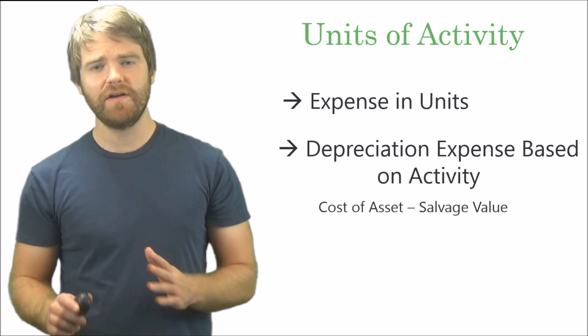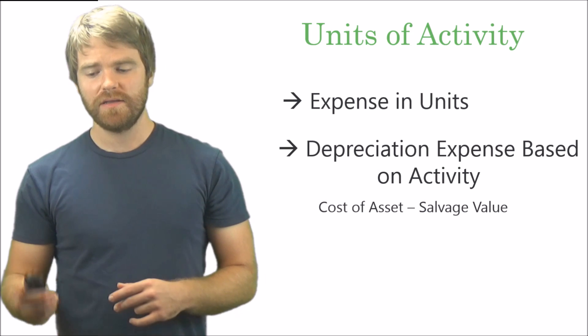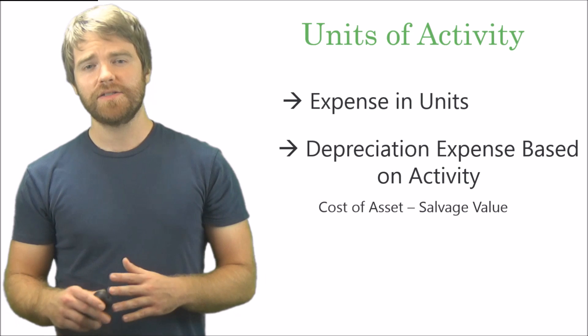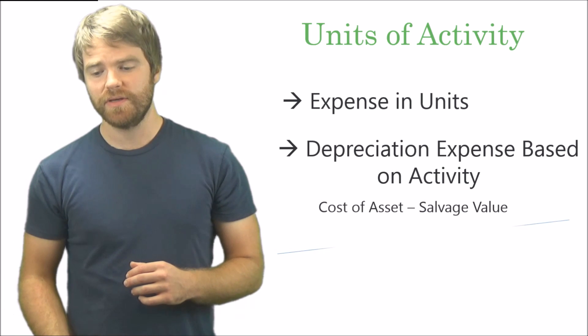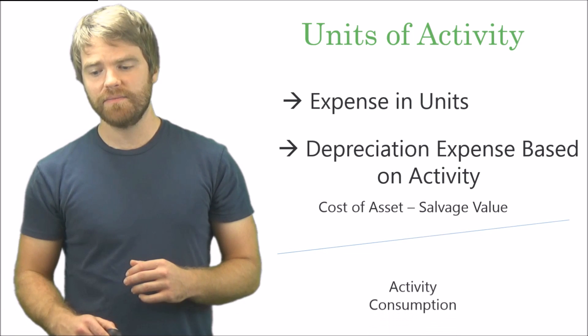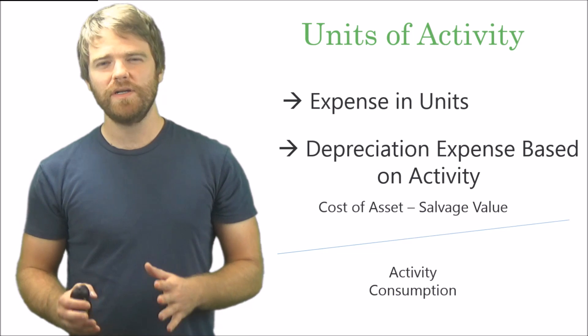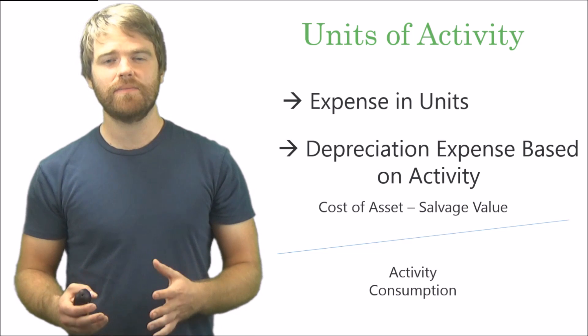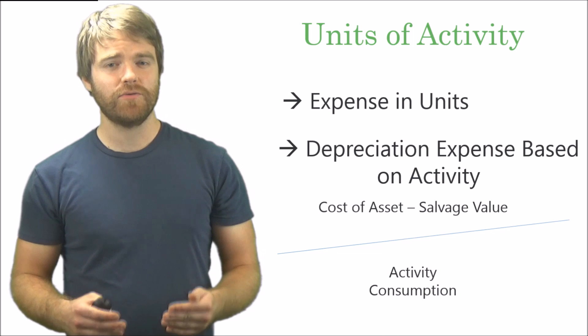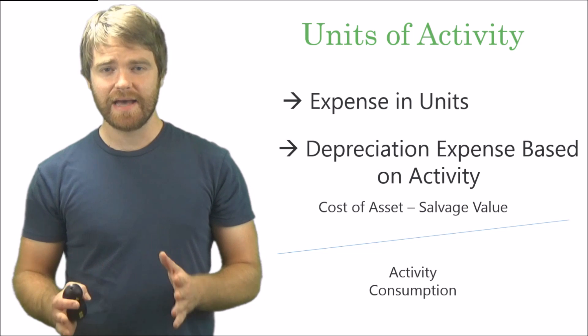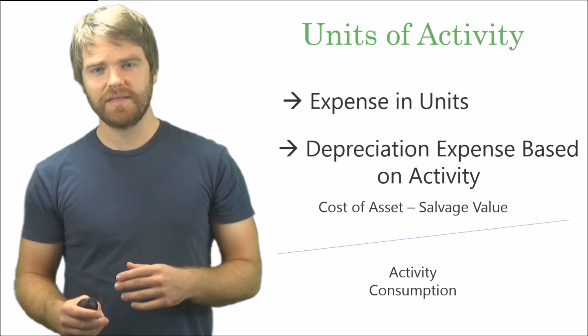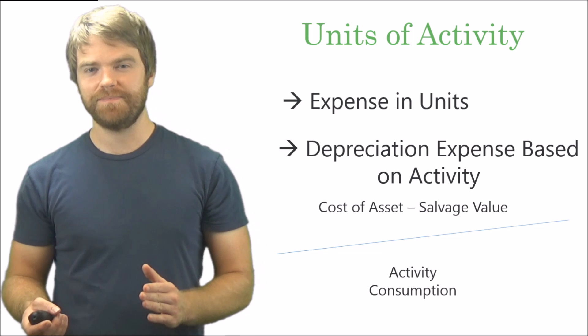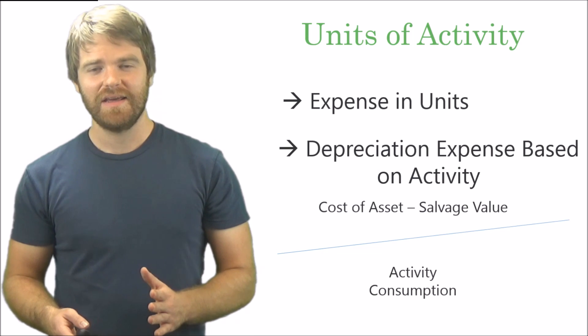Here's the formula. It's very similar to straight line. Take the cost of the asset, subtract out your salvage value, then you divide by the activity consumption. So in straight line it was useful life of that asset. Now we divide by the activity consumption. The best way I can explain it to you is with an example.